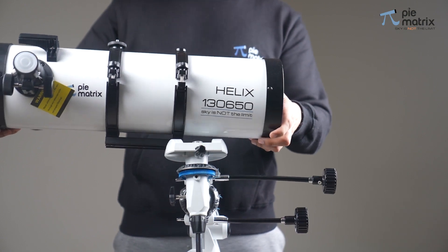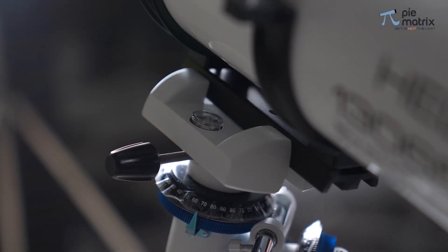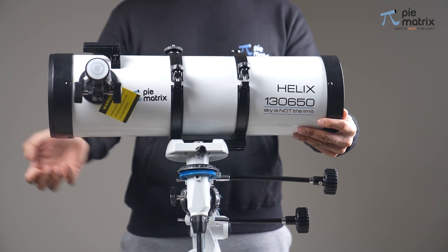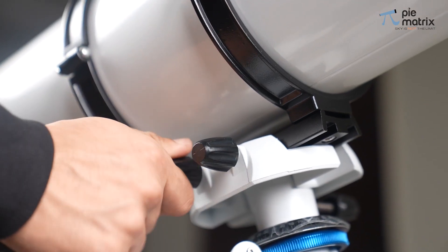Now all we have to do is slide the optical tube assembly through the dovetail saddle and lock it using the dec lock knob.